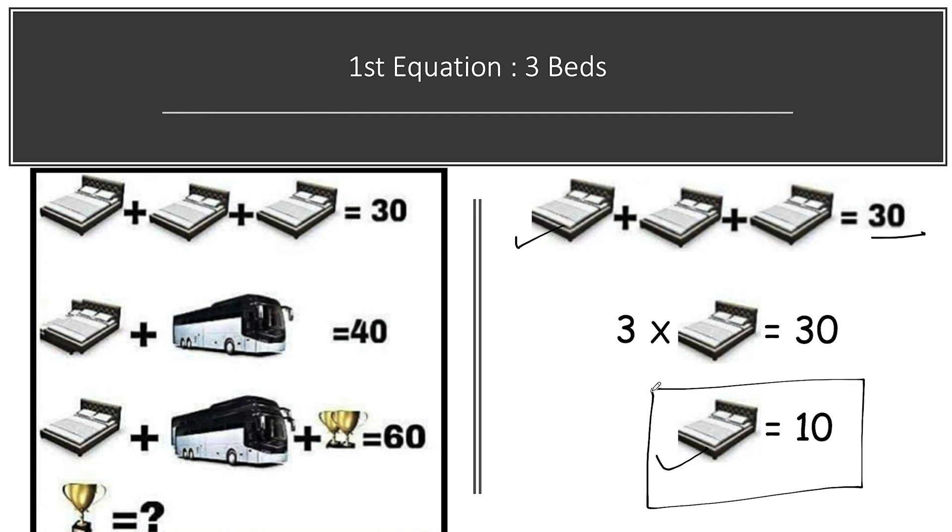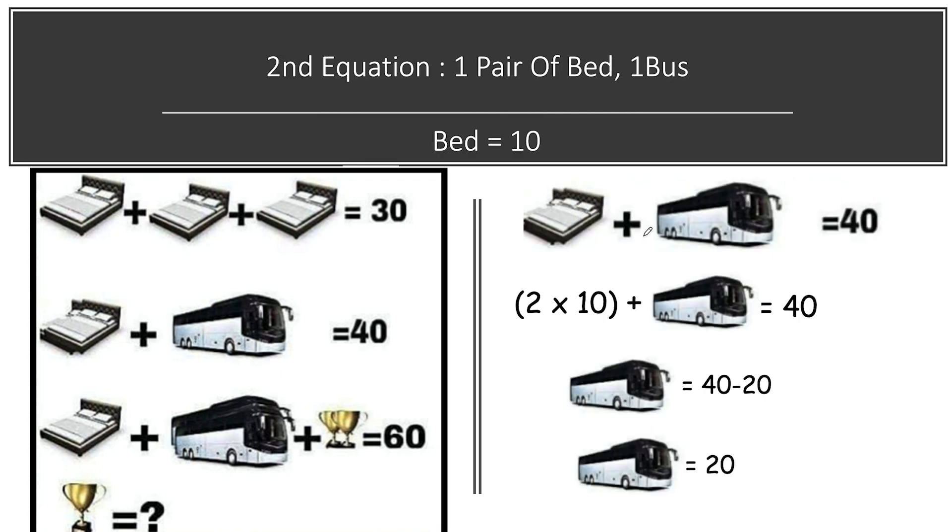When you solve the value of one bed it will come out to be 30 divided by 3, that is equal to 10. Now jumping on to a second equation, we have one pair of beds. As you can see, one bed is below and one bed is above, and a single bus is present and total value is equal to 40.